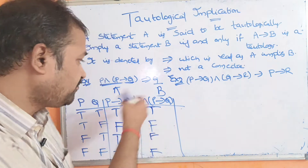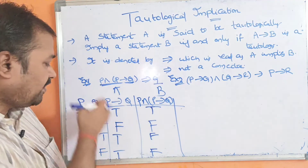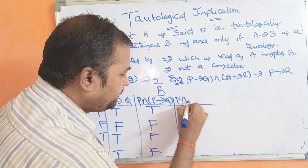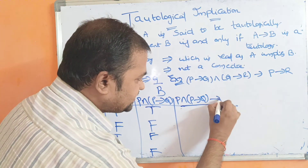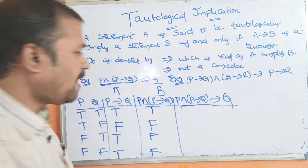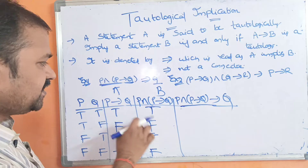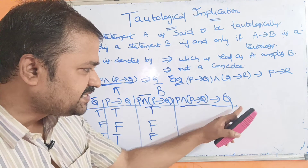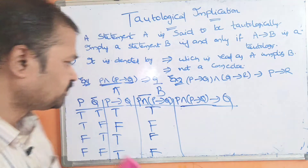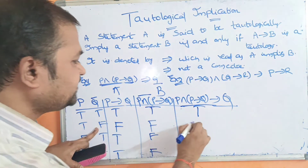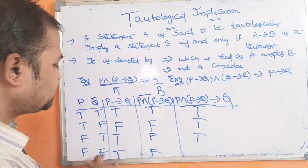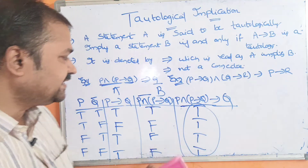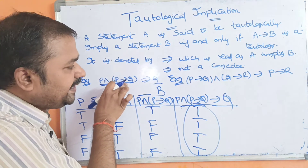The RHS is B, which is Q — we already have the Q column. Now we compute A→B, i.e., (P∧(P→Q))→Q, performing implication on the fourth column (A) and the second column (Q). The results are: T→T=T, F→F=T, F→T=T, F→F=T. The final column contains all true values, so this is a tautology. Therefore P ∧ (P→Q) is tautologically implied to Q.